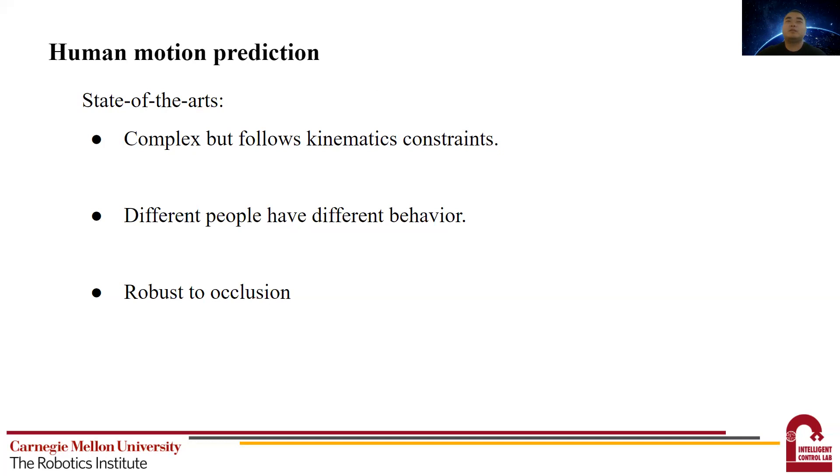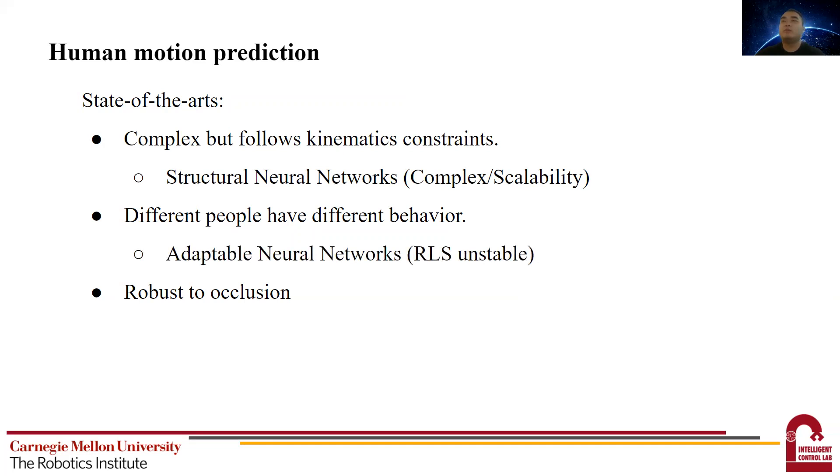There exist many works that try to predict human motion. There exist works that try to use structural neural networks to encode the physical constraints. However, this encoding method makes the framework complex and difficult to scale.